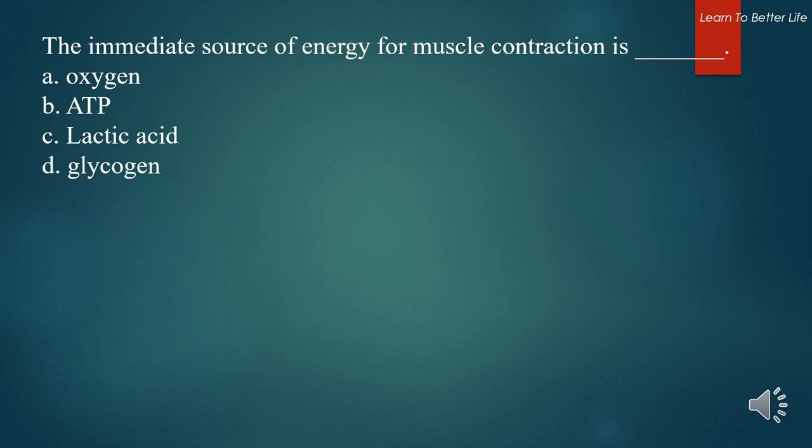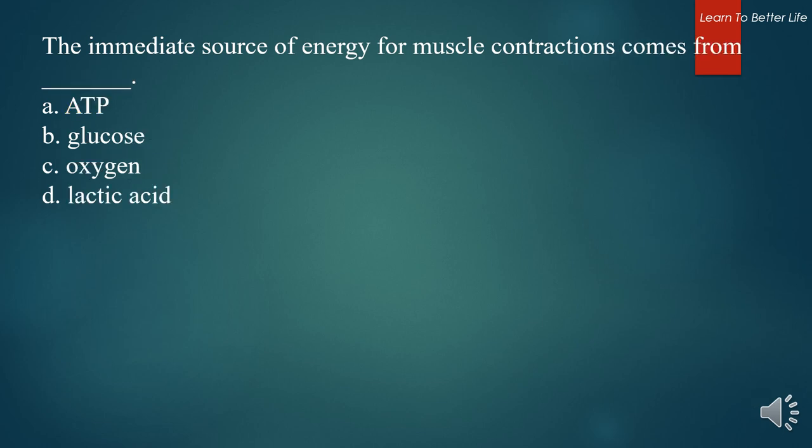The immediate source of energy for muscle contraction is what? A. Oxygen. B. ATP. C. Lactic acid. D. Glycogen. The answer is B. ATP. The immediate source of energy for muscle contractions comes from what? A. ATP. B. Glucose. C. Oxygen. D. Lactic acid. The answer is A. ATP.